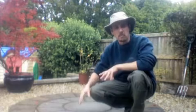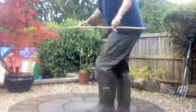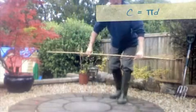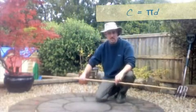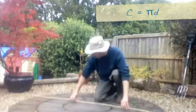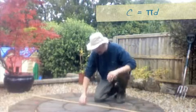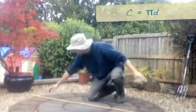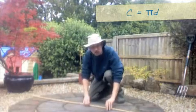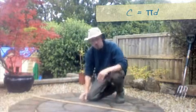I've looked in the gardening catalogues and I need to find out some information about the size of this circle so I can order the replacement. First of all, I need to find out the circumference. I'm going to need to find the diameter of the circle and times it by pi. The diameter is the distance across the centre of the circle from one side to the other, passing through the centre point.